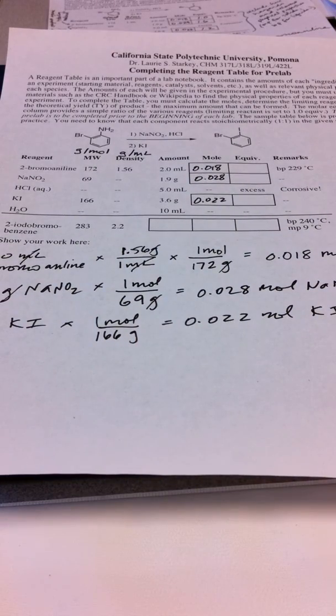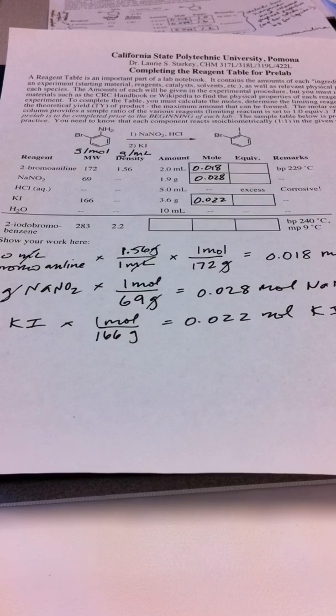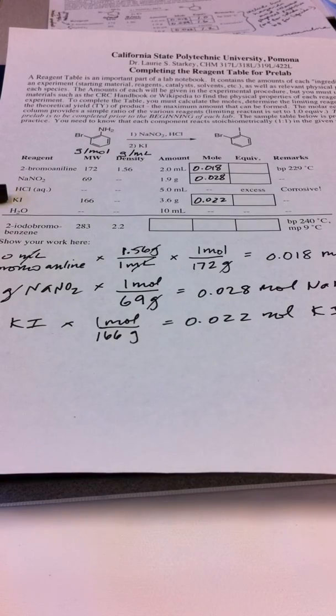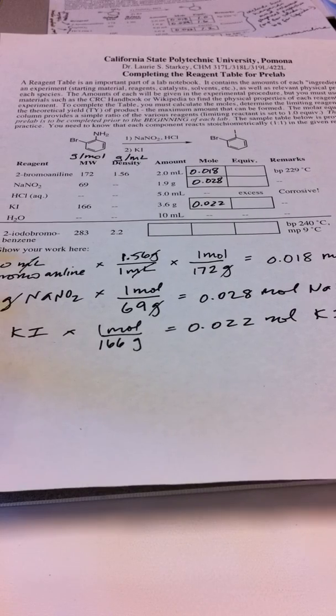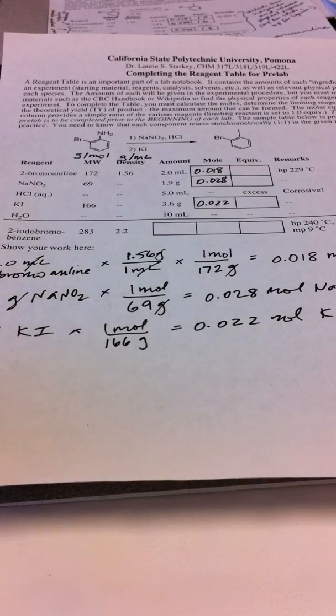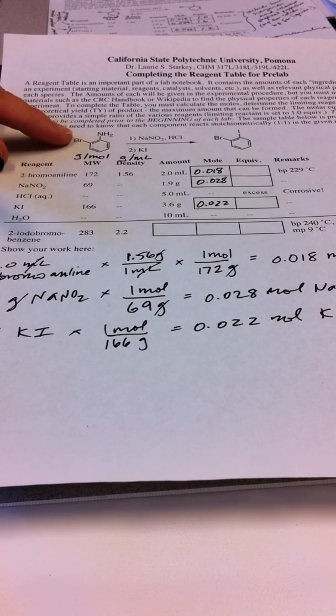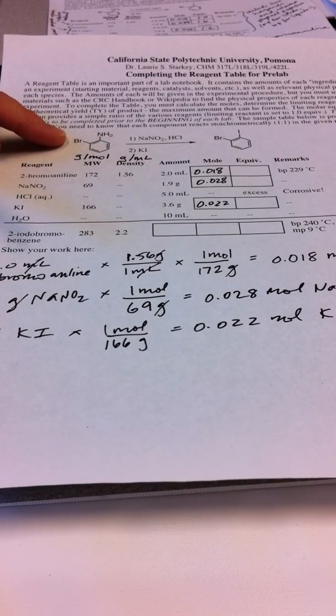Now what we need to calculate is how much product we can expect to make. We call that the theoretical yield, the maximum amount of product that can be formed. In order to figure that out, we need to look at our reagents that are going in to decide which of these reagents is going to be the limiting reagent, which is the one that we have the smallest amount of that's going to run out first. We're going to run in excess. We need to have some understanding of the reaction in order to make this decision.